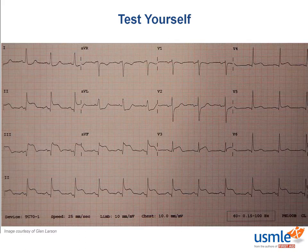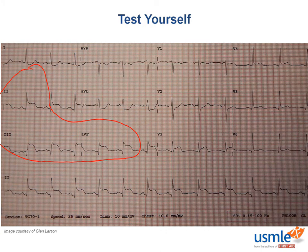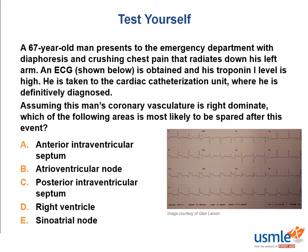We have ST elevations in leads 2, 3, and AVF consistent with an inferior MI, which is supplied by the RCA — so we know we have a right coronary artery infarct. The question states this patient has a dominant right coronary vasculature, so we just need to remember what the right coronary artery supplies. The answer that would be spared is the anterior intraventricular septum. The AV node is supplied by the RCA so it cannot be spared. The heart is right dominant, so the posterior interventricular septum supplied by the PDA is not spared. For the same reason, the right ventricle and SA node are also out.